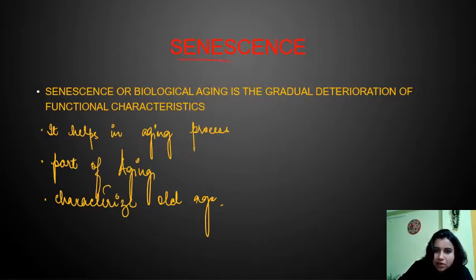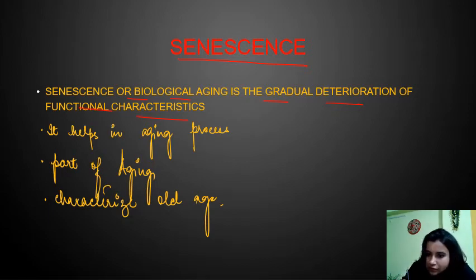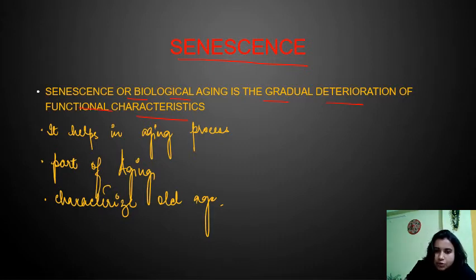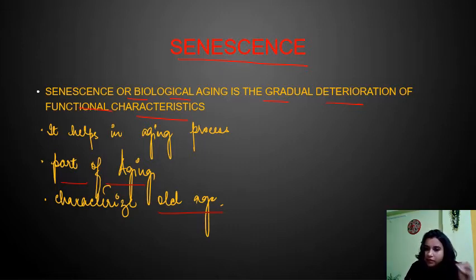Coming to senescence — senescence, or biological aging, is the gradual deterioration of functional characteristics. Senescence is a part of aging; it characterizes old age and helps in the aging process.